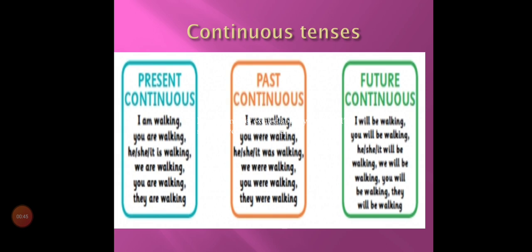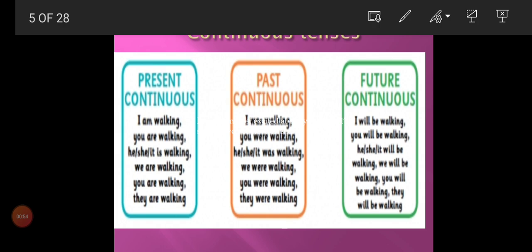The next topic is the continuous tenses. There are three forms of the continuous tenses: the present continuous tense, the past continuous tense, and the future continuous tense.